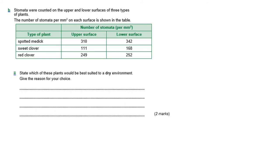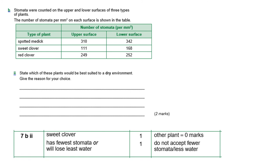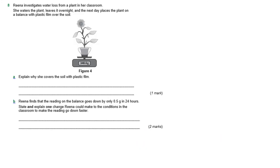Stomata were then counted. I've got the same stem of the question because it's still relating to that table. So state which of these plants would be best suited to a dry environment. Give the reason for your choice. Now think, water is lost through the stomata, so you want the plant with the lowest number of stomata. So sweet clover is the only acceptable answer, and I can't even let you get away with clover because there are two types of clover, so we have to say sweet clover. And it's because it has the fewer stomata, or you can say it will lose the least amount of water. So you need to comment on either that there's fewer stomata or it will lose the least amount of water. And obviously in a dry environment you want to not lose too much water.